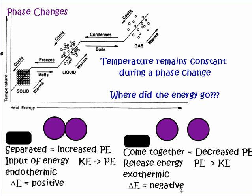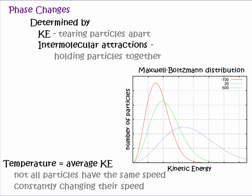When particles come together it's an exothermic process and delta E is negative. This is the overriding principle in chemistry: when things come together it's exothermic, and when things are separated it's endothermic. Notice that both melting and freezing take place at exactly the same temperature. Phase changes are determined by two factors: the kinetic energy — the motion of the particles that tries to tear apart the molecular structure — and the intermolecular attractions, which hold the particles together.